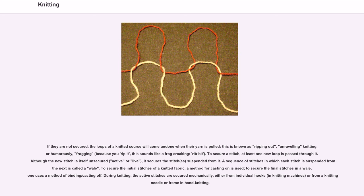To secure a stitch, at least one new loop is passed through it. Although the new stitch is itself unsecured — active or live — it secures the stitch suspended from it. A sequence of stitches in which each stitch is suspended from the next is called a wale. To secure the initial stitches of a knitted fabric, a method for casting on is used; to secure the final stitches in a wale, one uses a method of binding off/casting off.